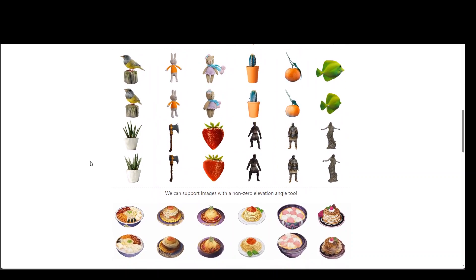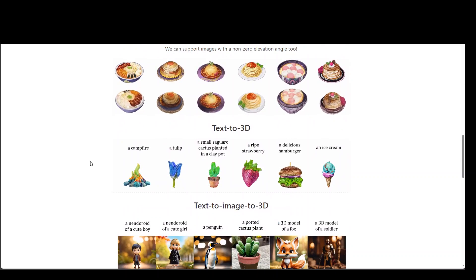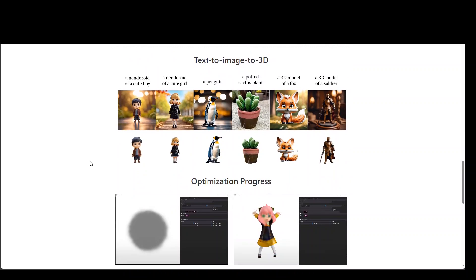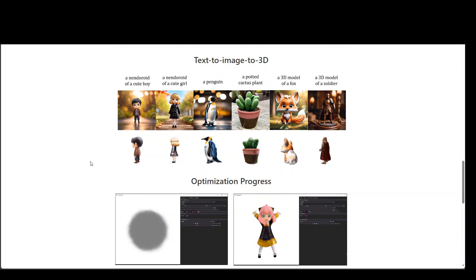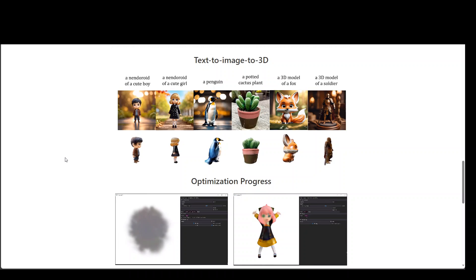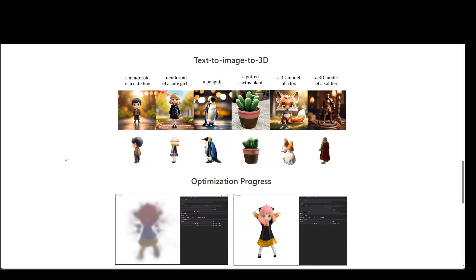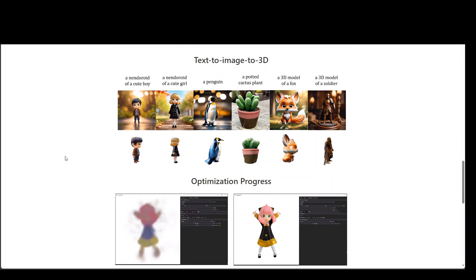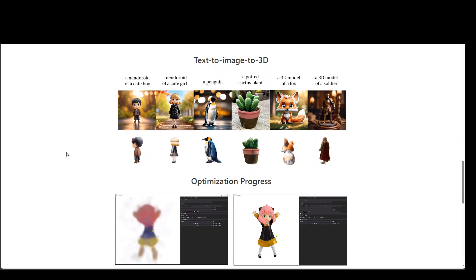As I mentioned earlier, DreamGaussian cuts down generation time from 20 minutes to under 2 minutes, which is really fast and comparable to inference-only methods like 123, 45, Point-E, and ShapeE, which I have already discussed in a few other videos.